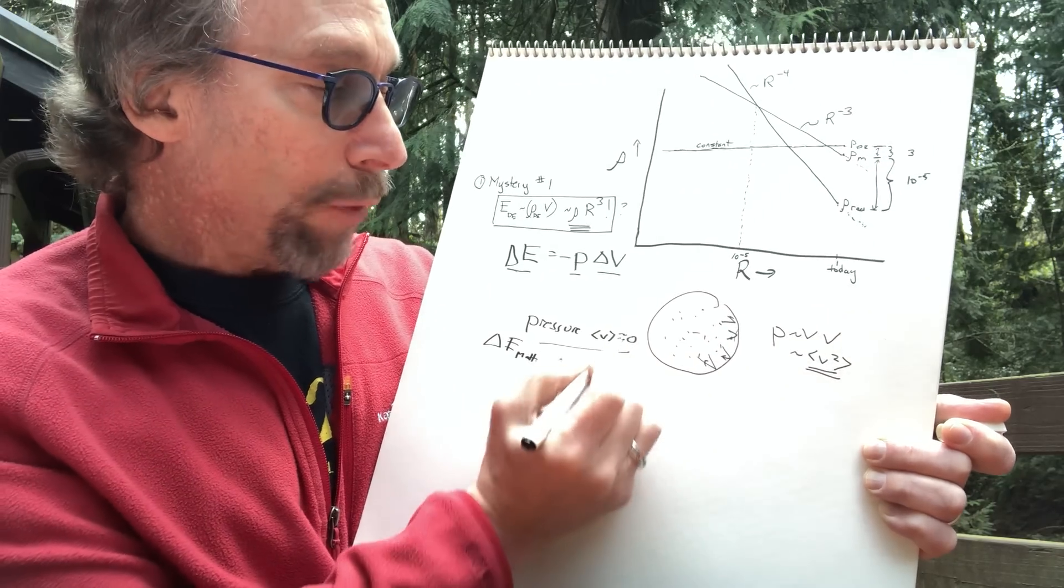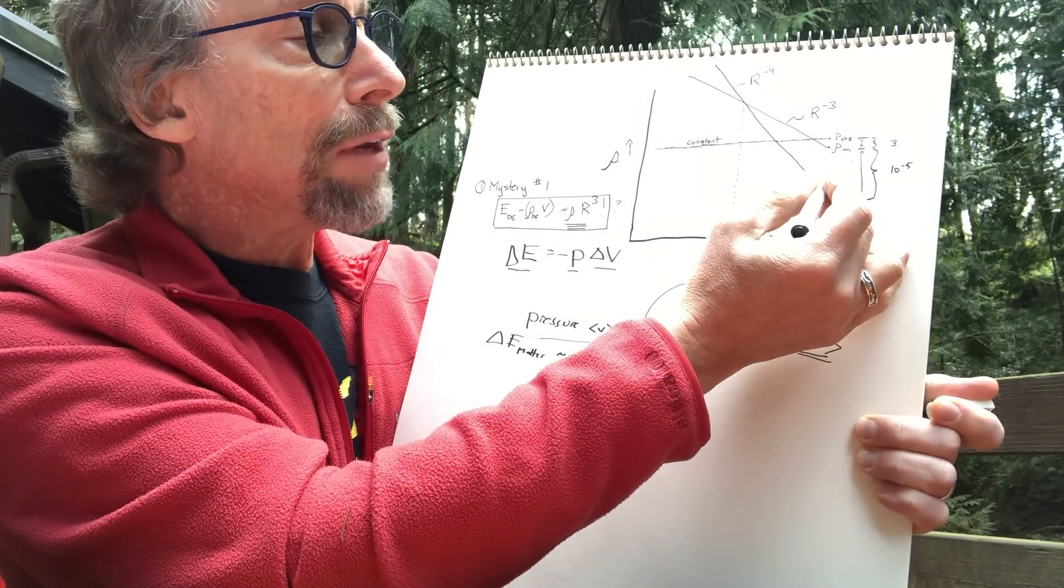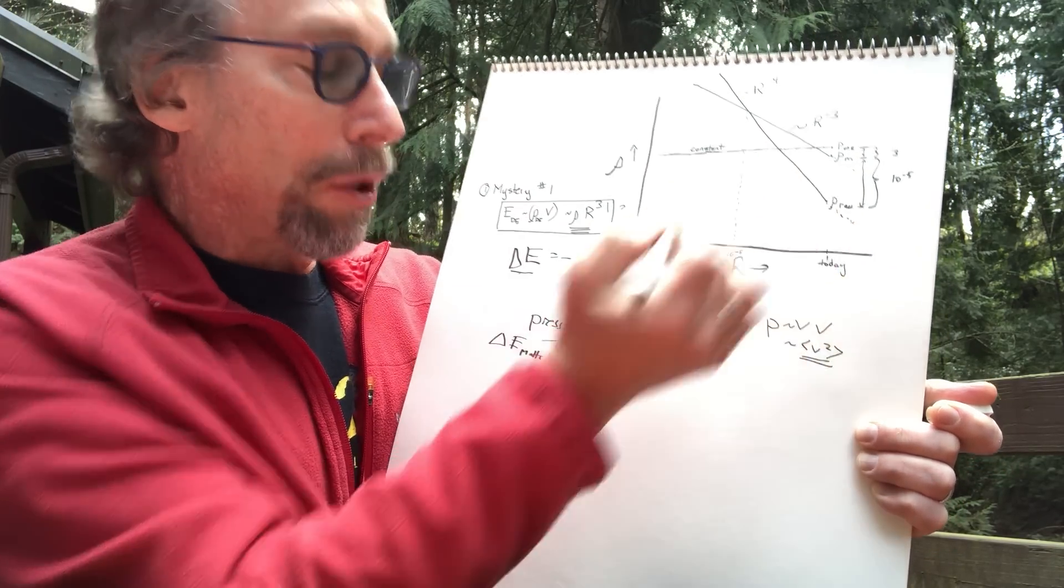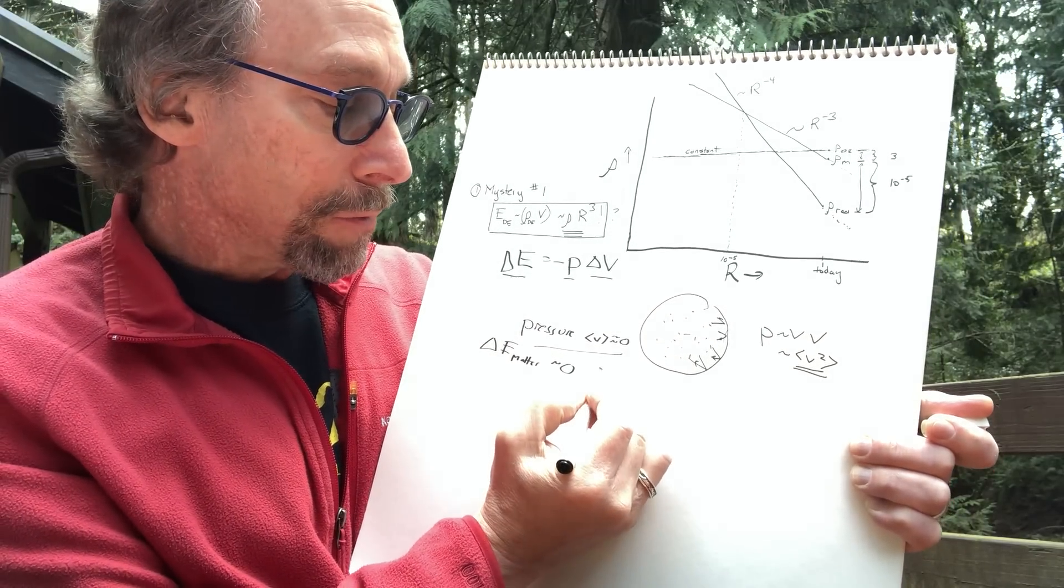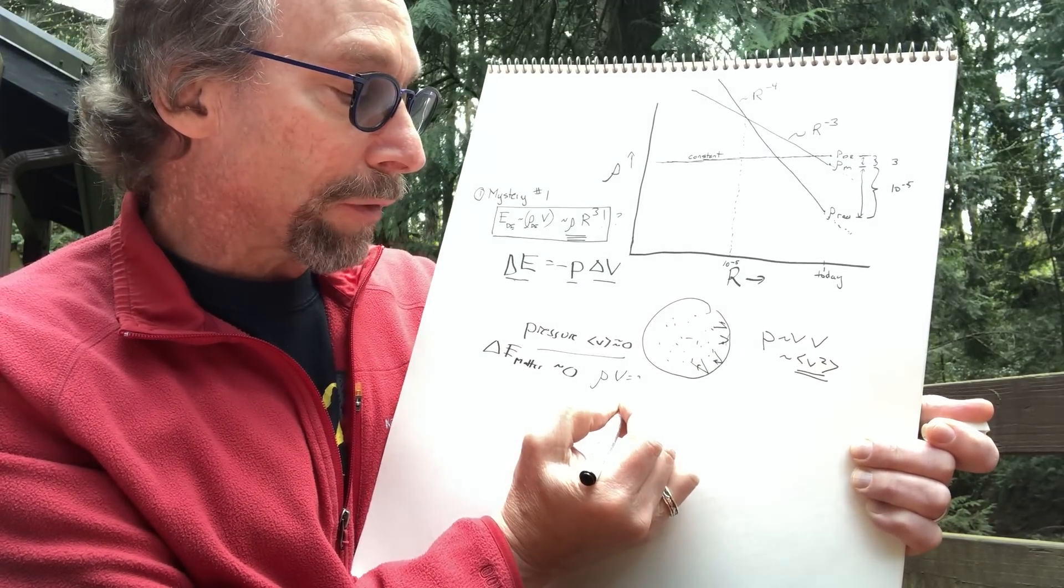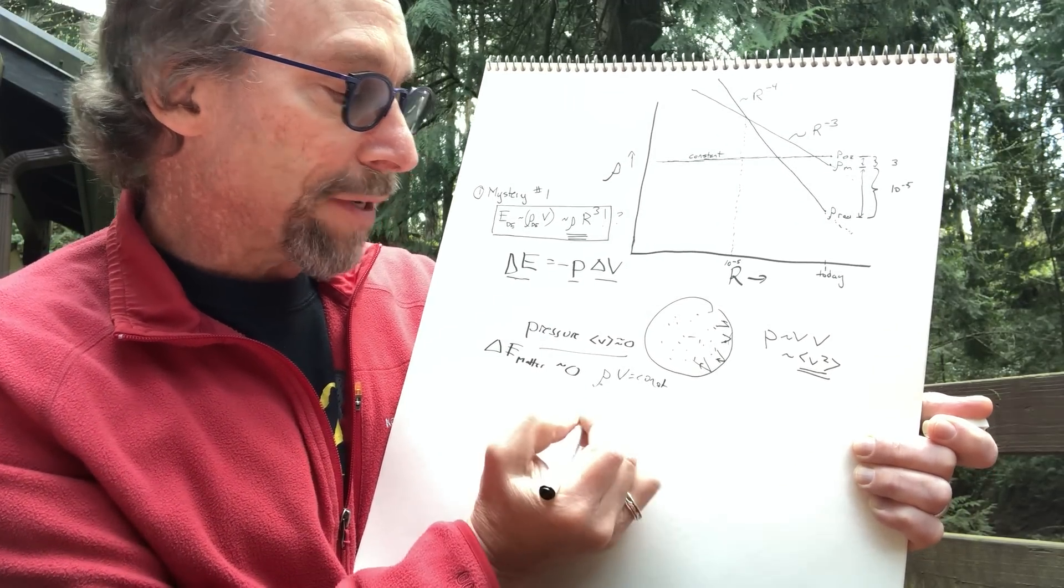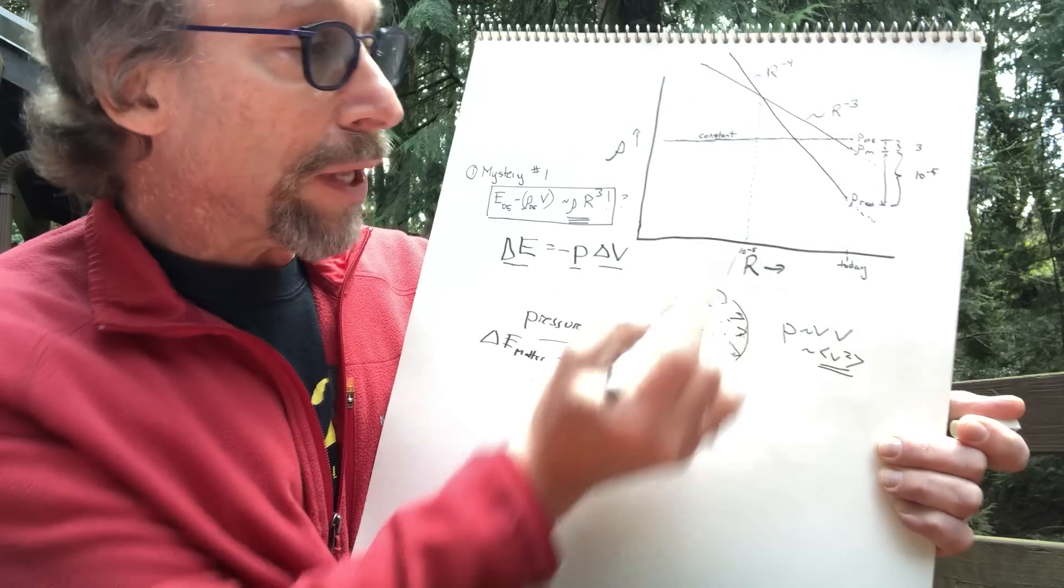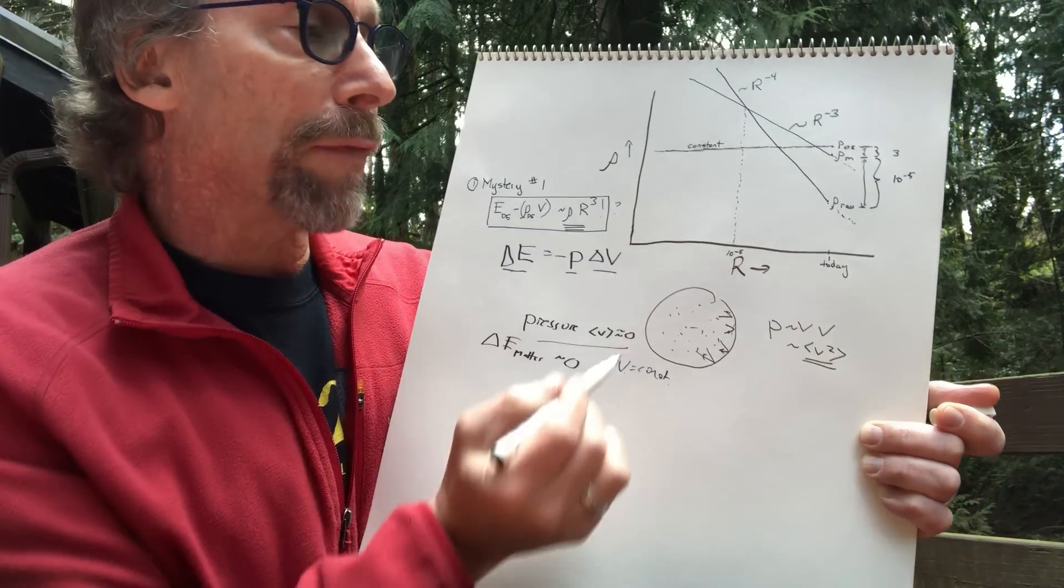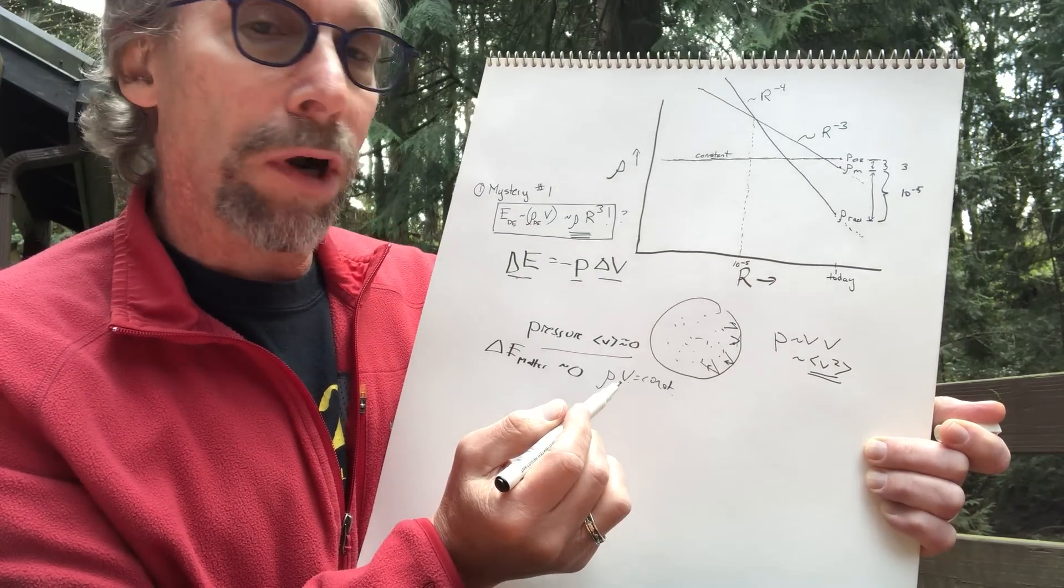So the change in energy of matter in any volume is zero. What does that mean? Well, that we can see that because the density falls as one over the volume, the density times the volume in that case, the density times the volume is a constant. Because one of them is going down as one over r cubed, and one of them is going up as r cubed. So for matter, we can understand that it's not doing work on the expansion. And that's why it goes down as one over r cubed.